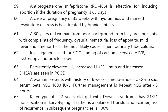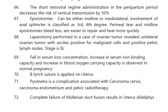The karyotype of a two-year-old girl with Down syndrome showing 21:21 translocation on karyotyping — if the father is a balanced translocation carrier, the risk of recurrence in subsequent pregnancies is 100 percent.